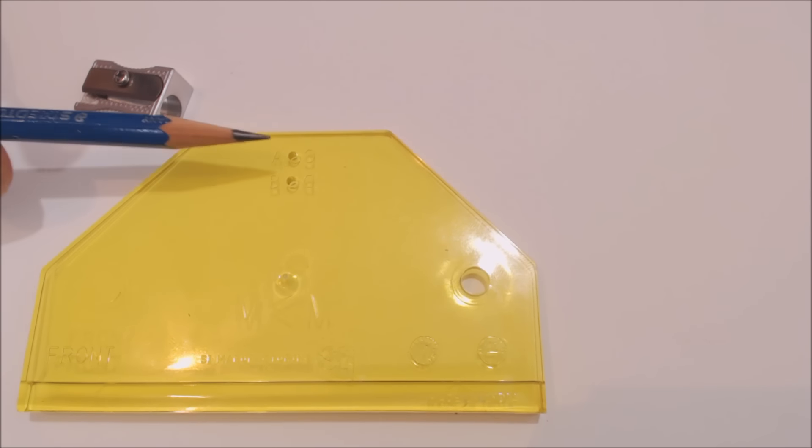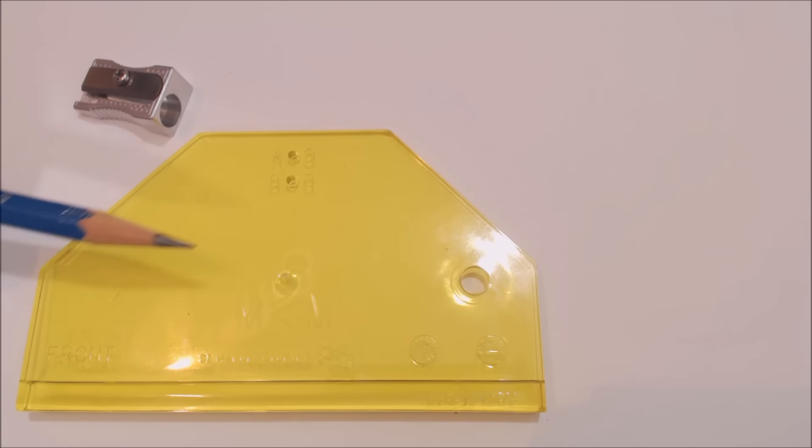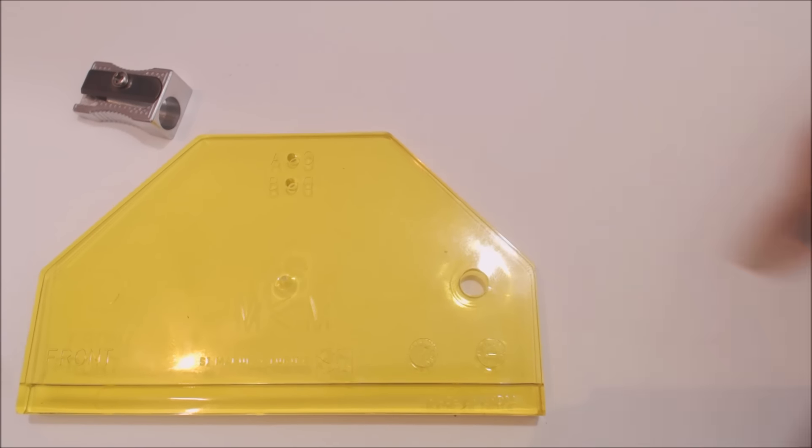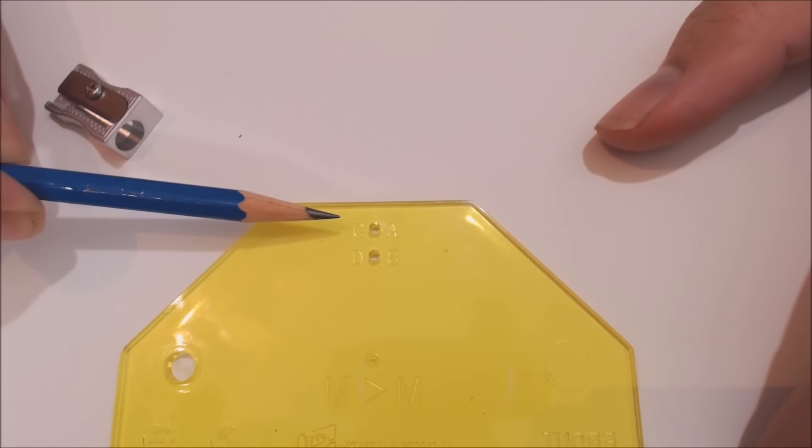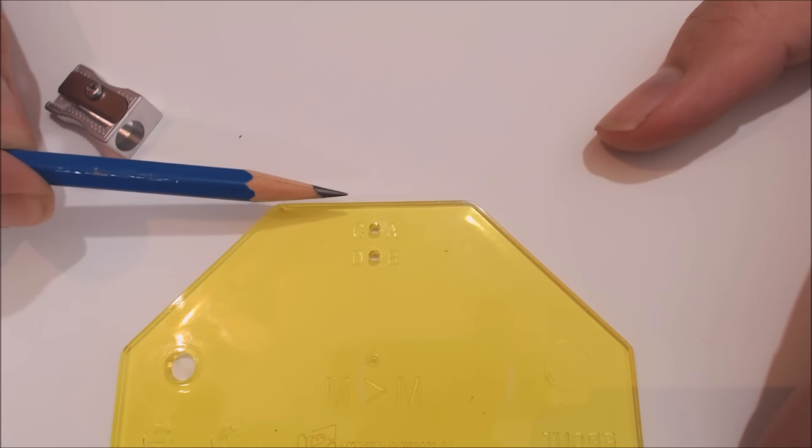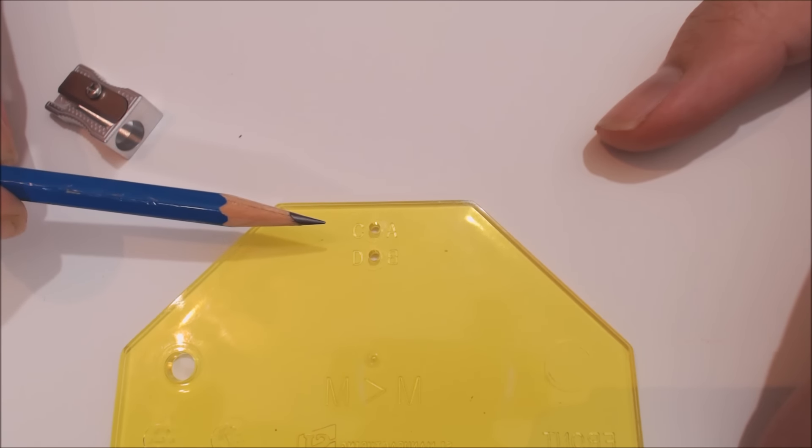So here we have the front of the tool. You can see we have holes A and B and the front of the tool is labeled front. If we flip the tool over and look through you'll notice you also have the letters C and D. This is the back of the tool and these holes will be used as well.